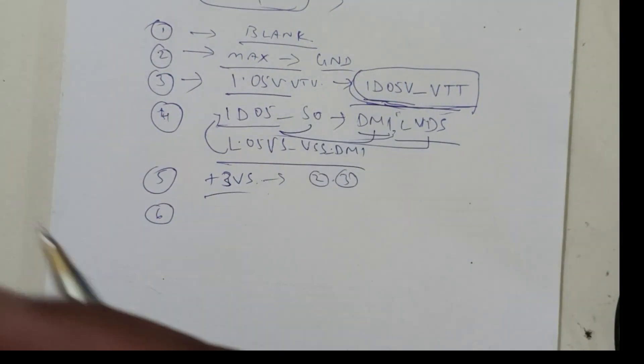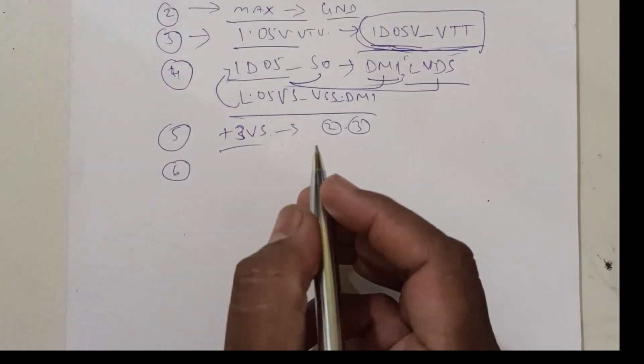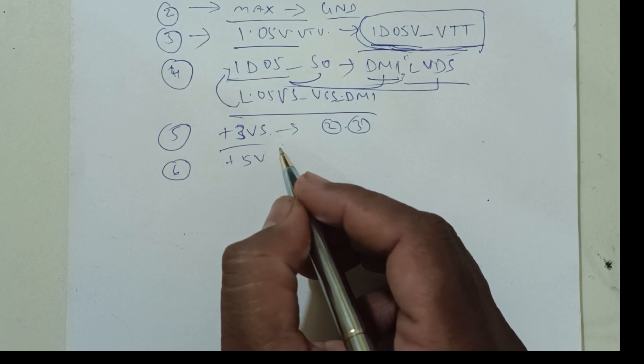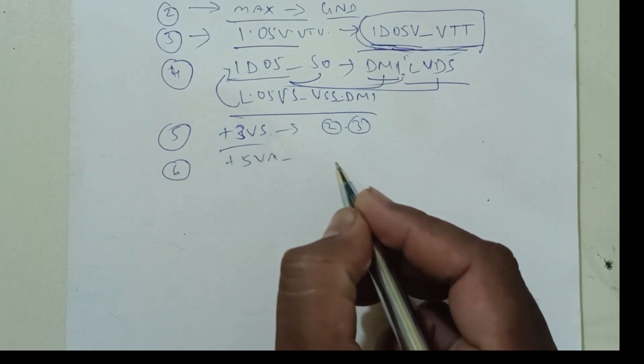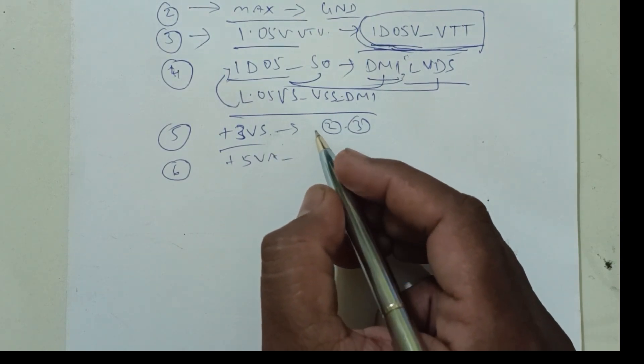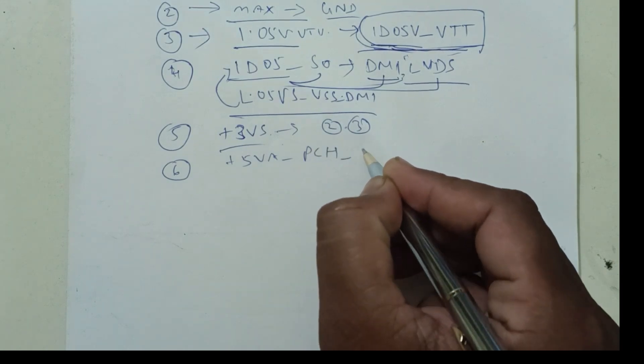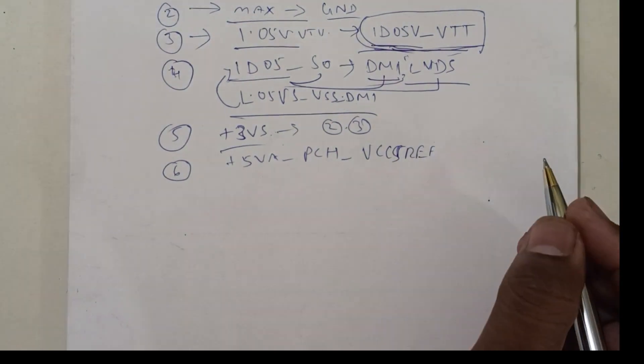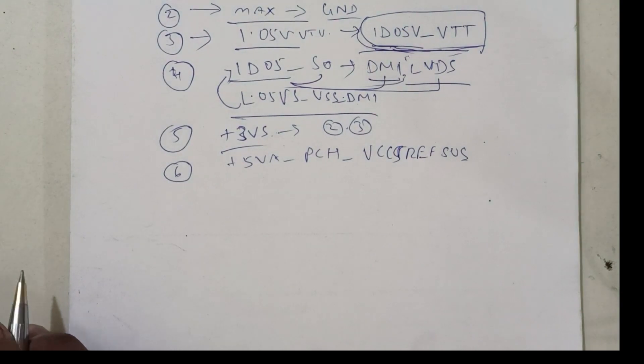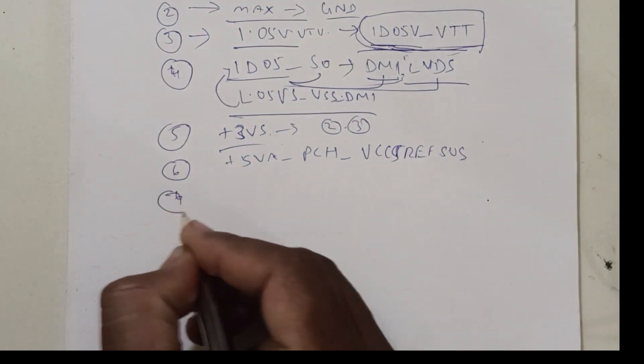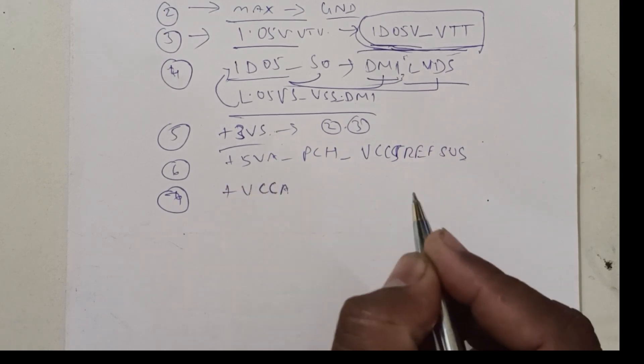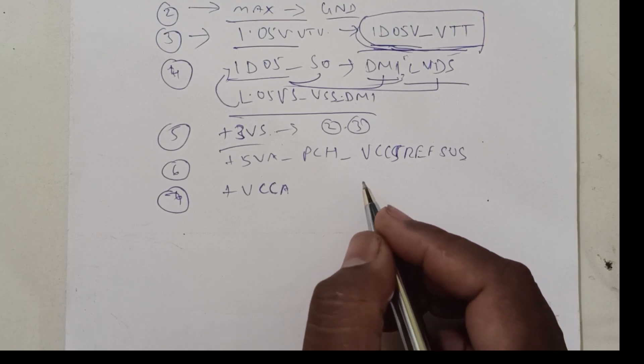Next, we will go through the order one by one. Next 5VS, just 5VS VA underscore PCH underscore VCC fire reference, such voltage. Next, seventh one, plus VCC VA, this kind of voltage.